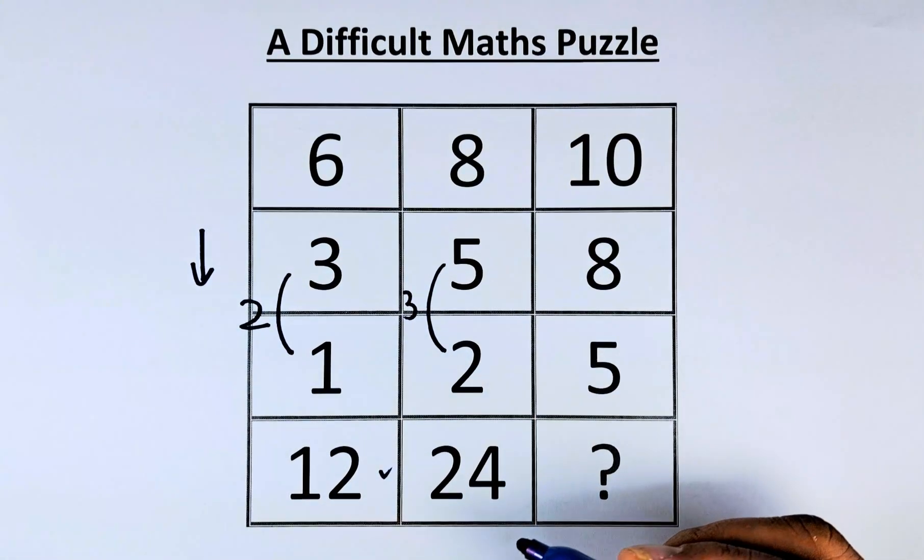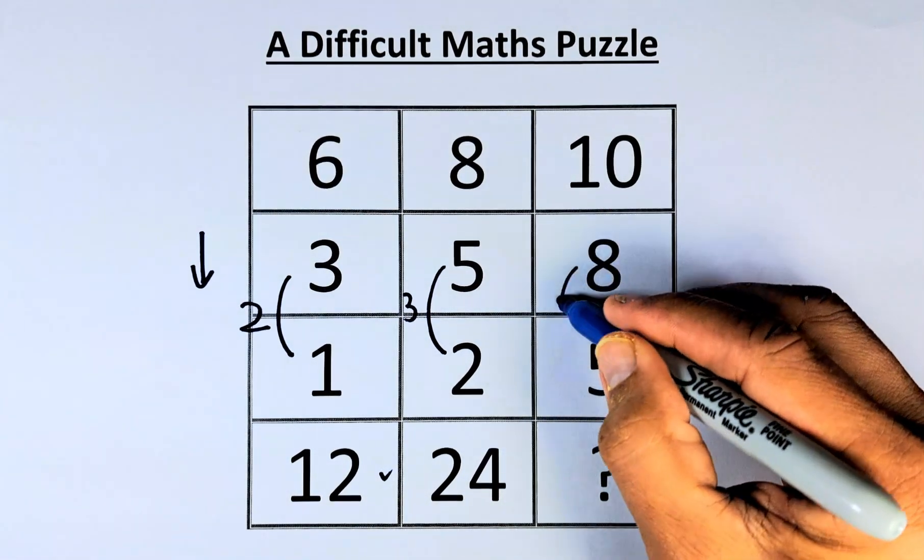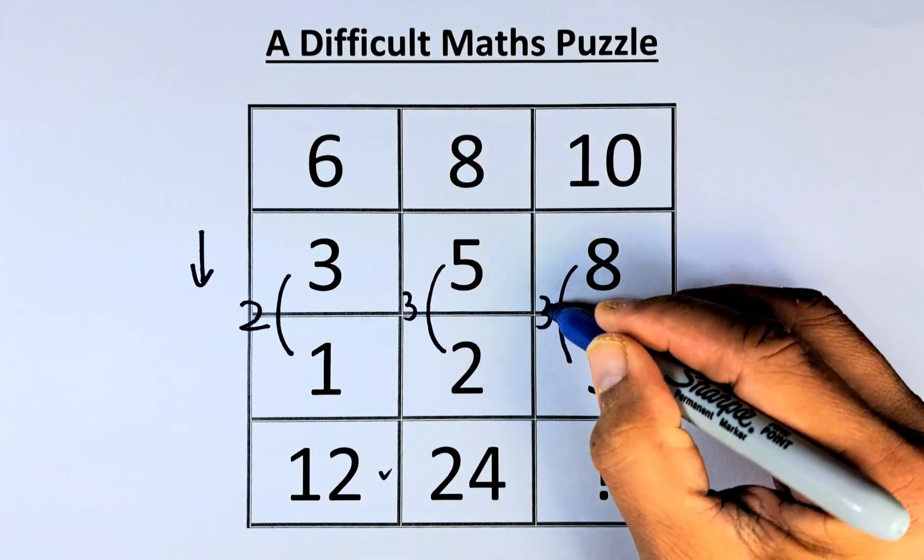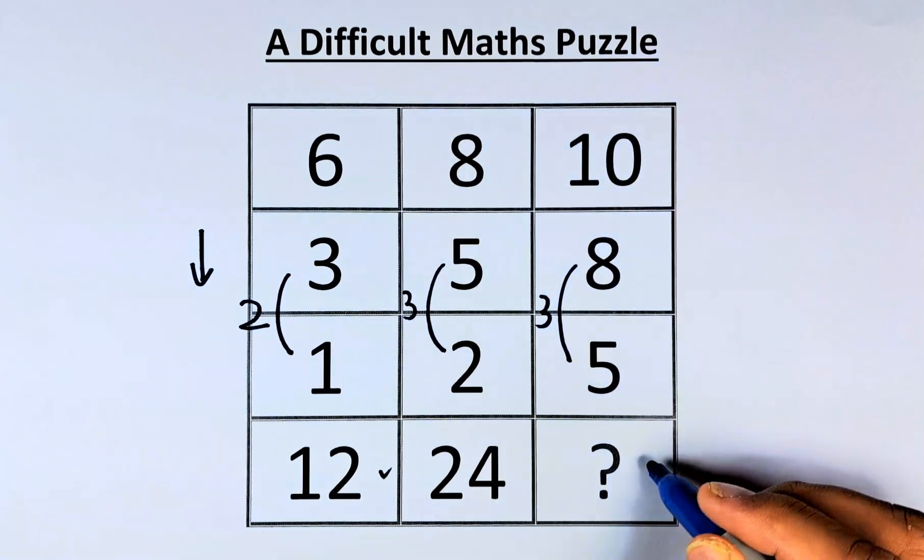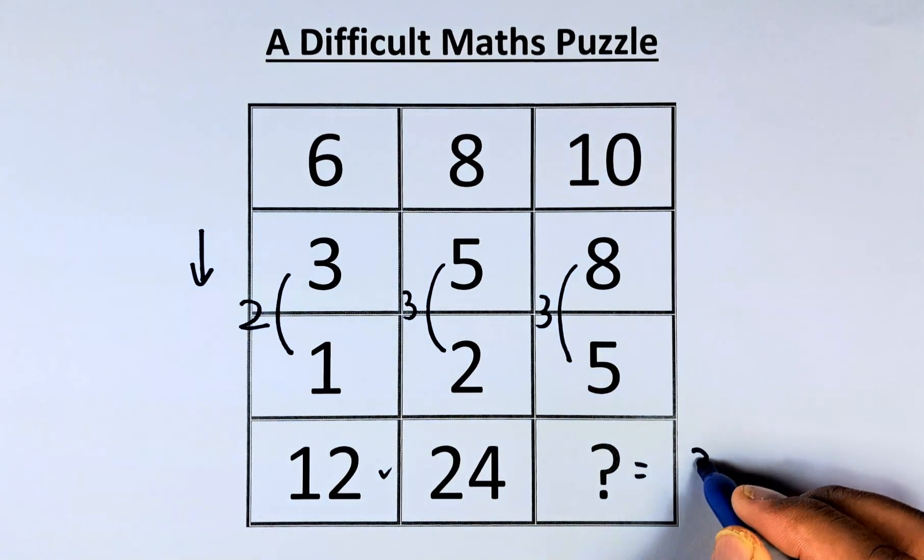And of course, in our last column, we're going to do the same thing. 8 minus 5 will again be 3. 3 multiplied by 10 will give you 30. So the question mark is equal to 30.